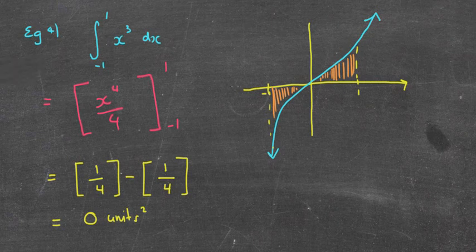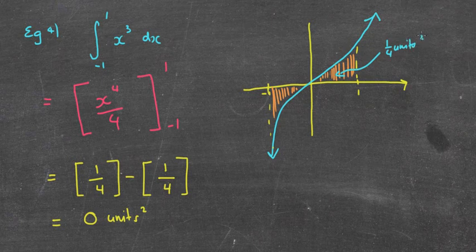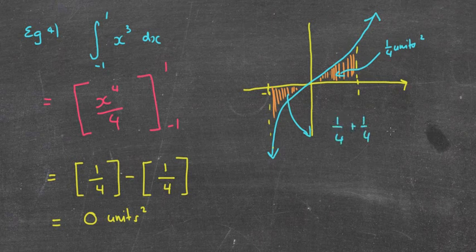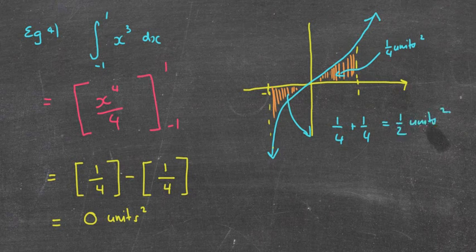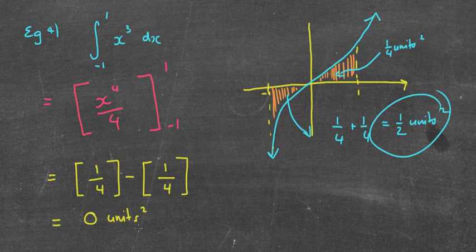So why do you think it's come up with zero? Well, hopefully you've recognized that the area in here is one quarter units squared, which is the same as over here. So realistically what it should be is a quarter plus a quarter which equals a half, not zero. So what happens, unfortunately, you know, if we find the area underneath this curve here, it actually gives me a negative area, and that will often happen. Obviously that can't be right, so we take the absolute value of that.